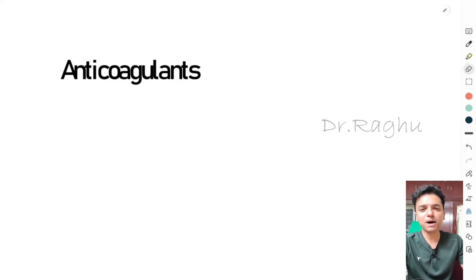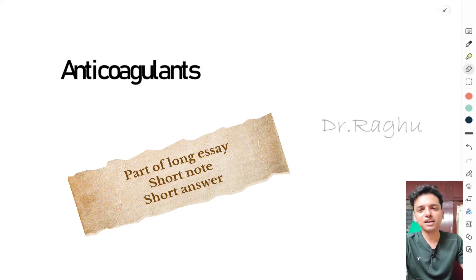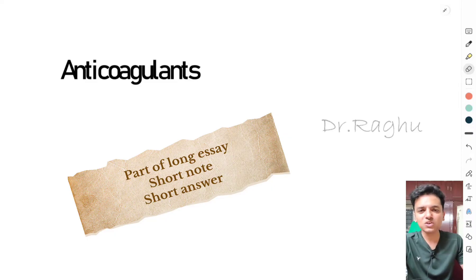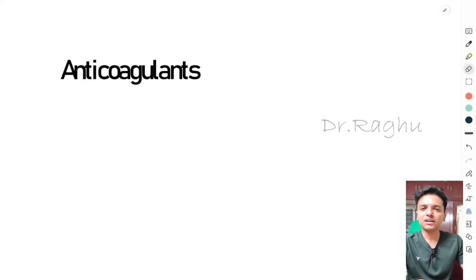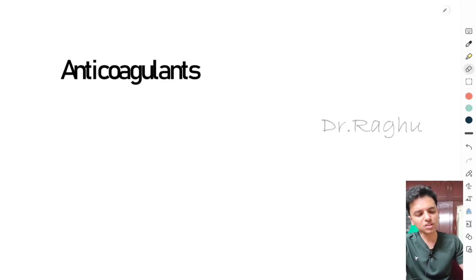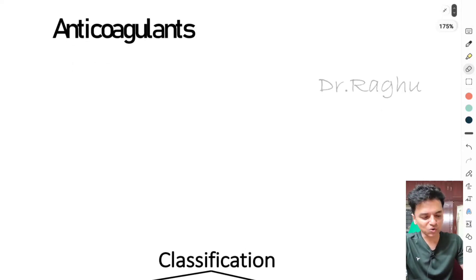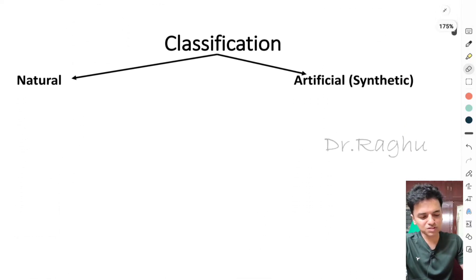Anticoagulants can be asked as part of a long essay on the coagulation cascade — the intrinsic and extrinsic pathways — with a note on anticoagulants added. They can also be asked separately as a short note for five or six marks, or as a three-marker question. Watch this video till the end so you understand what to write if this question appears in your exam.